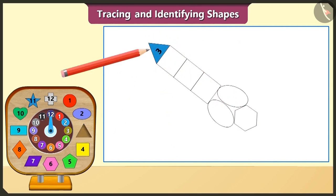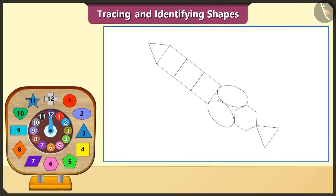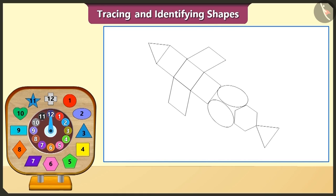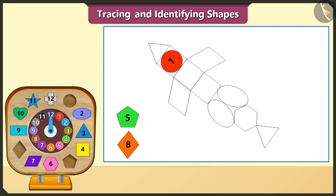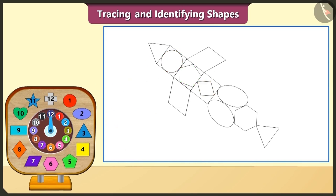Now we will trace this triangle block and draw two triangles like this. Now we will take the quadrilateral block and place it like this and trace it, drawing two quadrilaterals. Now look at these blocks — this is a circle, this is a pentagon and this is a rhombus. Now we will place these blocks in the three traced square shapes and trace them.